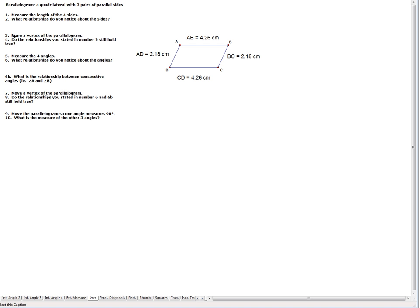Step three here says move a vertex of the parallelogram. Remember, a vertex is a corner. So I'm going to grab A. Notice as I move it, AB and CD are changing, but they're changing exactly the same amount. If I did that from C, you'll notice now the two sides have changed in size, but they're still the same. Do the relationships you stated in number two still hold true? And yes, they are. They are all still congruent.